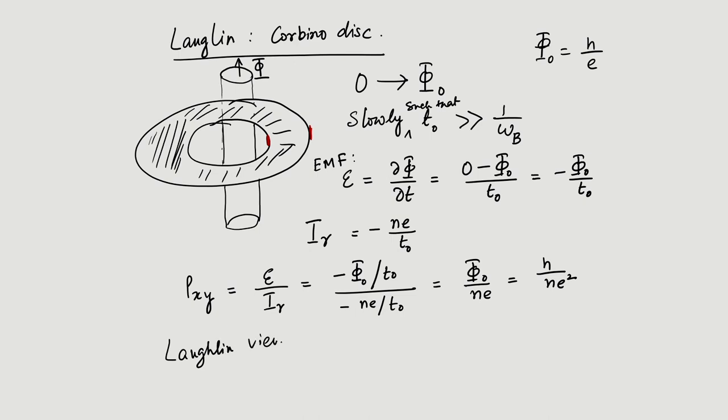Laughlin actually viewed the quantum Hall effect as a quantum pump which pumps electrons from the inner edge of the sample to the outer edge. This is a nice visualization of the quantum phenomena — one or two electrons transported from the inner to the outer edge as the threading magnetic flux is increased, and the annular 2D electron gas responds with resistivity of this form.